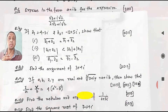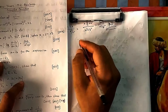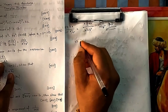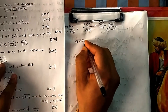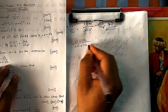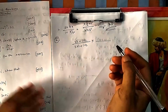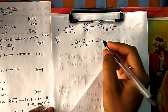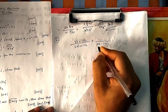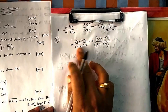Let's try to solve these questions and express them in a+ib form — that is, we need to separate the real and imaginary parts. To do this, you multiply the numerator and denominator by the conjugate of the denominator so we can separate it out.